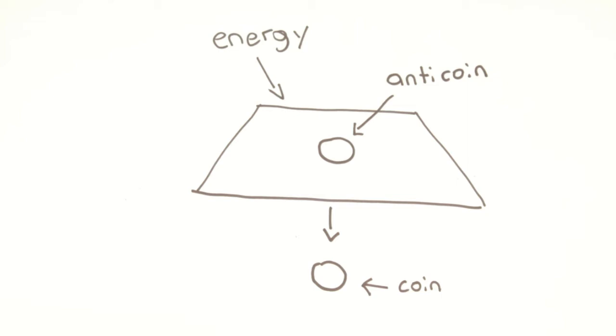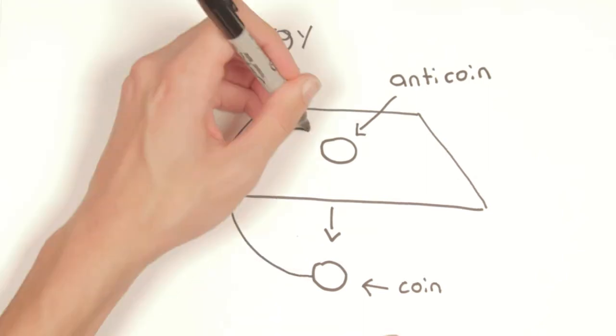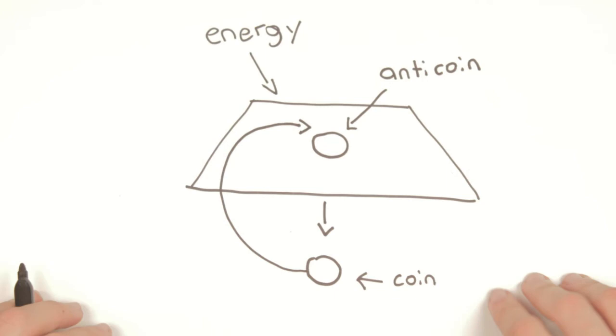This demonstrates that matter and antimatter are dependent upon one another. You can't have one without the other, just as you can't have the coin without the anticoin. When the coin is placed back into the sheet, there is no longer any discernible coin or anticoin, just the sheet, or energy.